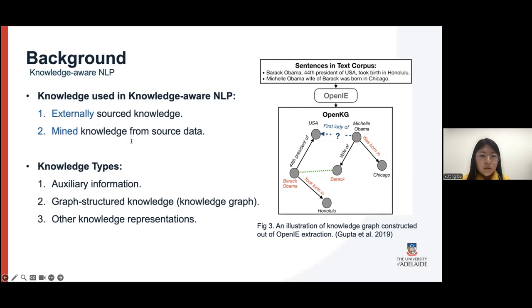The term knowledge can be in three types of information: auxiliary information such as keywords or key phrases; graph structure knowledge databases such as knowledge graphs and externally open-source knowledge graphs such as ConceptNet or Wikipedia; or other knowledge representations such as knowledge embeddings or other knowledge methods in machine learning or model training.